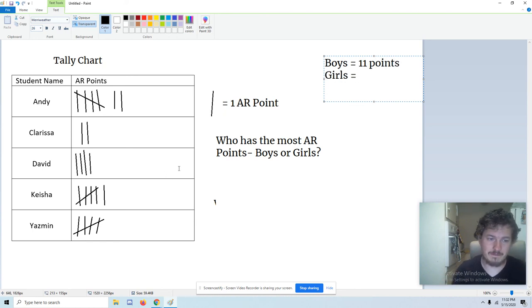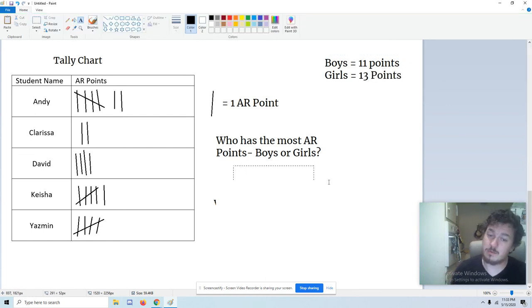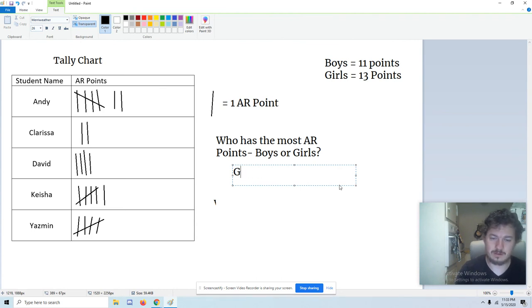The girls have... So Clarissa has two. Keisha has... We said these bundles are worth five. And one more is six. Six, two more. Six, seven, eight. And Yasmin has one bundle, which means that's five. Eight, nine, ten, eleven, twelve, thirteen. The girls have thirteen points. Who has the most points? The girls do. The girls have the most points.